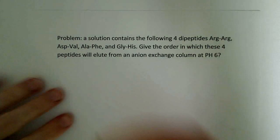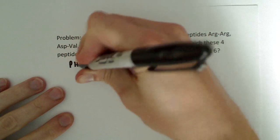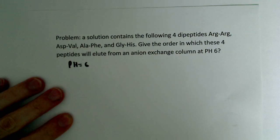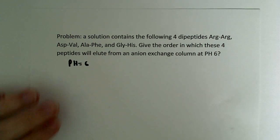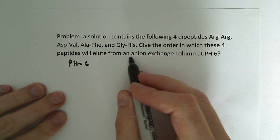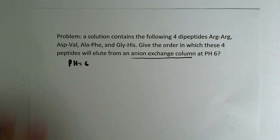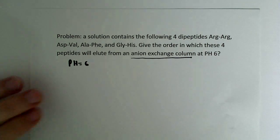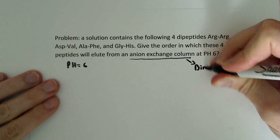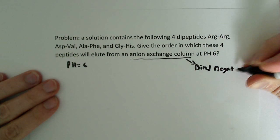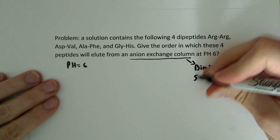Let's write down what we know. We know that we're at pH equals 6. The next thing I would do is recognize that we have an anion exchange column. So what does that mean? It means that the anion exchange column is going to bind negatively charged species.